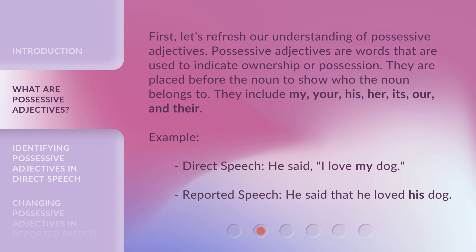Example — Direct Speech: He said, "I love my dog." Reported Speech: He said that he loved his dog.